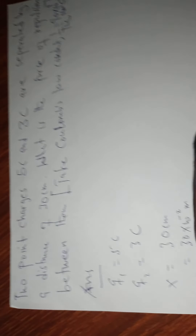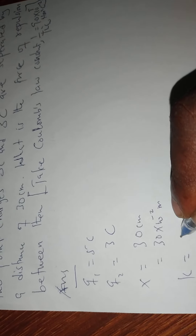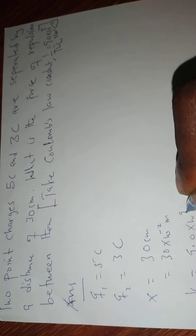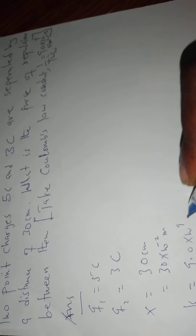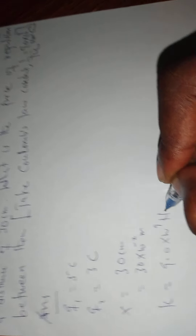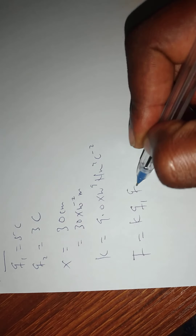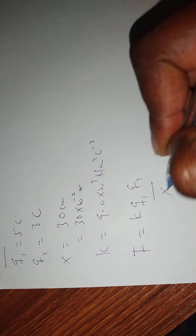We have our constant K equal to 9.0 times 10 raised to the power 9 newton meters squared per coulomb squared. We know that our force F is equal to K times Q1 times Q2, all over X squared. So let's substitute in the values.